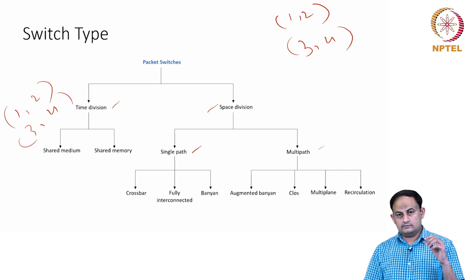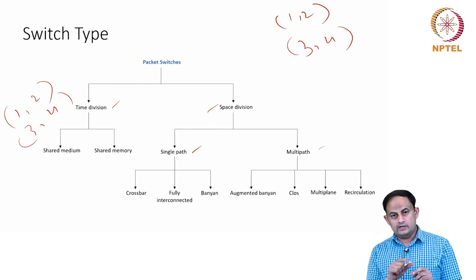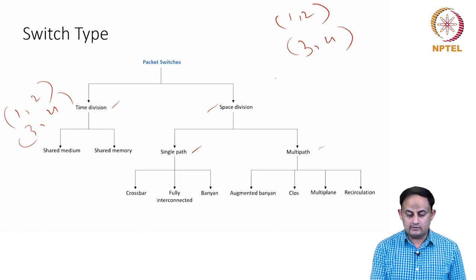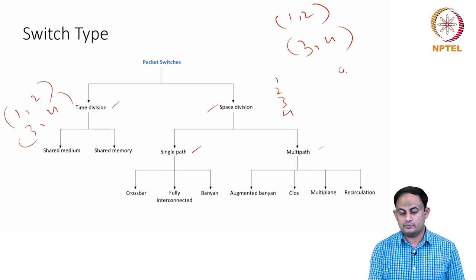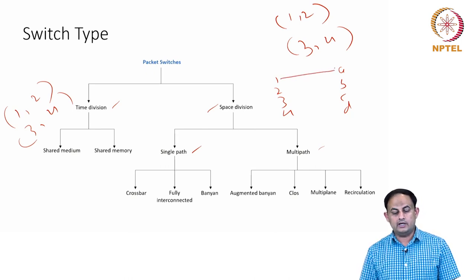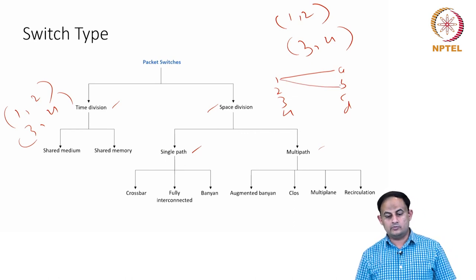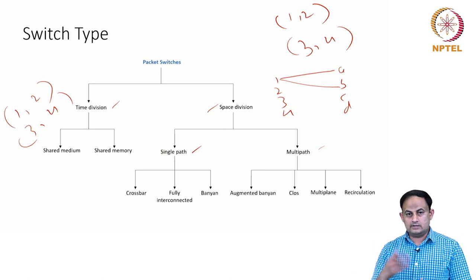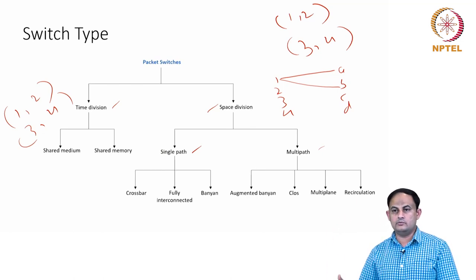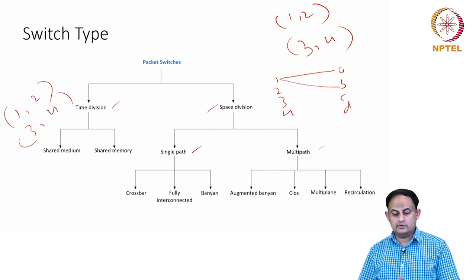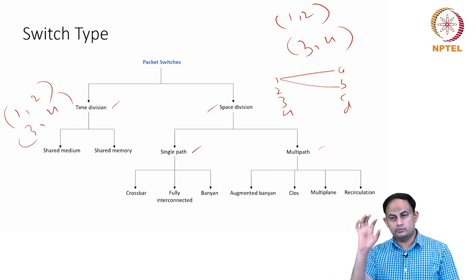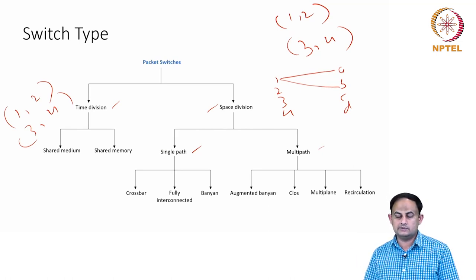A single path switch fabric has a unique path from one input port to one output port. For example, with input ports 1, 2, 3, 4 and output ports A, B, C, D, there is exactly one path from input 1 to output A, and exactly one path from input 1 to output B. As many output ports as there are, those many unique paths exist. Every time you forward a packet, you must use only that one path to establish the connection.